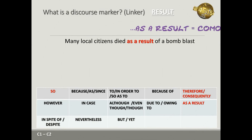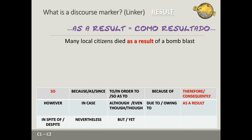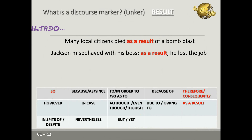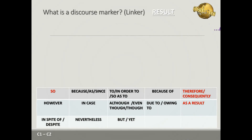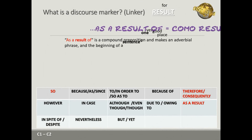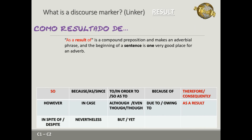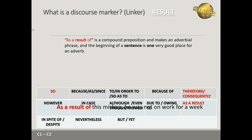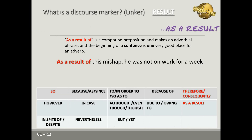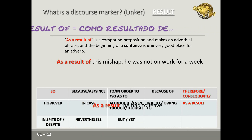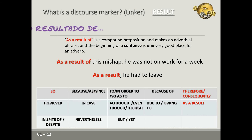Examples with 'as a result': 'Many local citizens died as a result of a bomb blast.' 'As a result of' is a compound preposition and makes an adverbial phrase. The beginning of a sentence is one very good place for an adverb. For example: 'As a result of this mishap, he was not at work for a week.' And simply: 'As a result, he had to leave.'